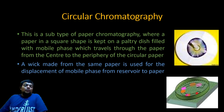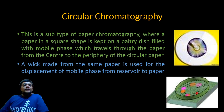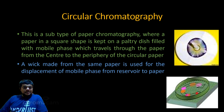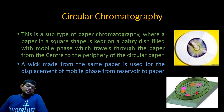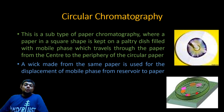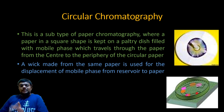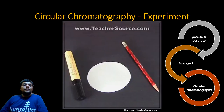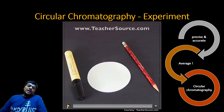Circular chromatography is a subtype of paper chromatography where a square or circular-shaped paper is kept on a petri dish filled with mobile phase, which travels through the paper from the center to the periphery. There are concepts in chromatography that are better understood through animations and video. First, I will go through a video of circular chromatography and then return to the explanation. Remember, the paper can be of a square or circular shape.